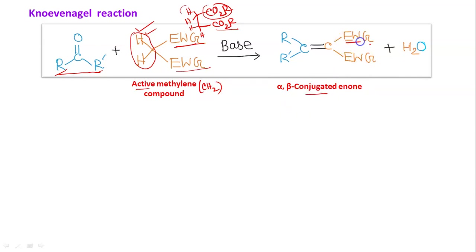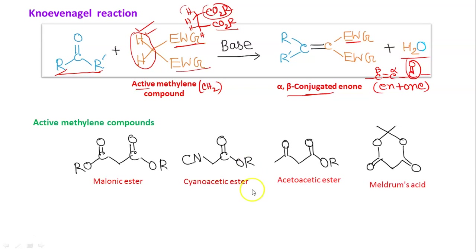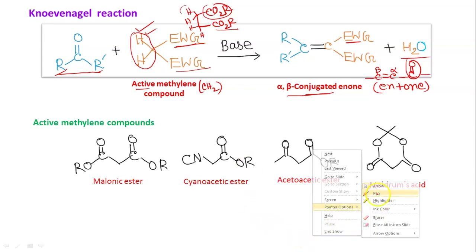The product here is an α,β-conjugated enone. Enone means there is a C=C double bond and a C=O group — this is the enone system. With respect to the carbonyl, this is the alpha carbon and this is the beta carbon, and a water molecule is removed. The Knoevenagel reaction can also be called a condensation reaction because two molecules join together to form a larger molecule with removal of water — it can also be called the Knoevenagel condensation.